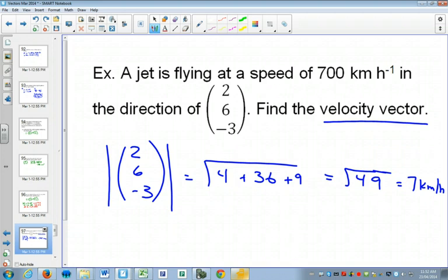Well, the velocity vector needs to have an x, y, and z, just like this one does. It needs to be in the same direction as this one, but it needs to be a longer vector.